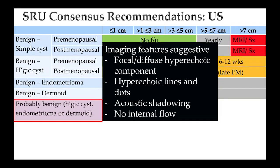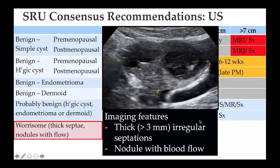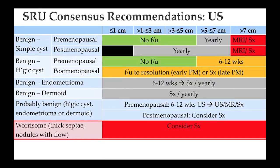Probably benign lesions are those where you think it might be a hemorrhagic cyst, endometrioma, or dermoid, but aren't quite sure. Imaging features are suggestive but there may be some focal or diffuse hyperechoic components, hyperechoic lines and dots, or acoustic shadowing, with no internal flow. In pre-menopausal women, get ultrasound at six to twelve weeks. In post-menopausal women, consider surgery. Lesions with worrisome findings — thick septations more than three millimeters, irregular septations, or solid nodules especially with blood flow — require surgical consideration. That is the summary of the SRU consensus statement.